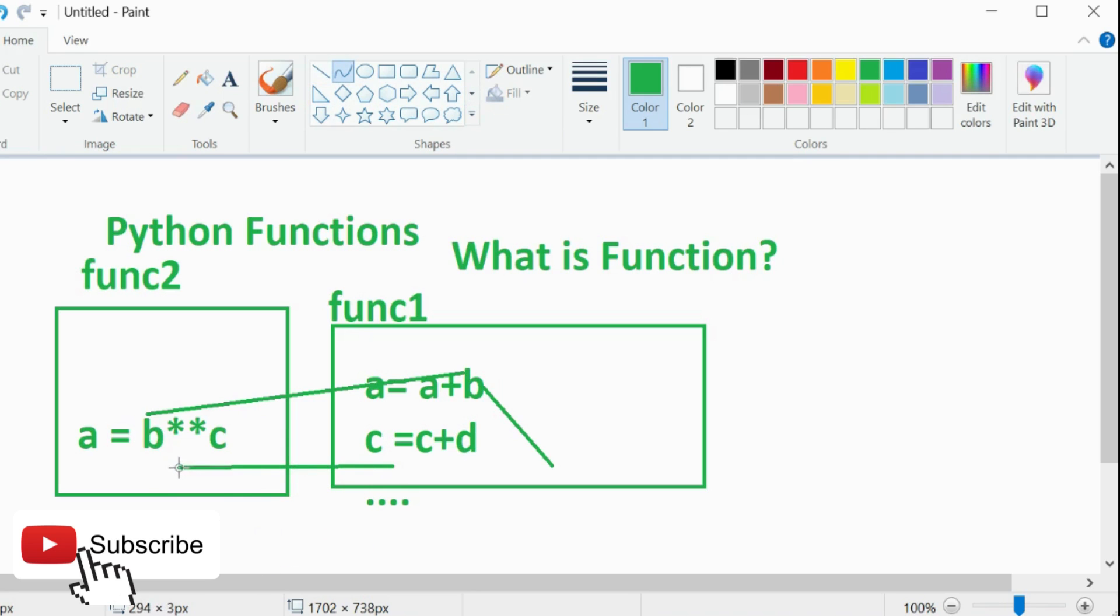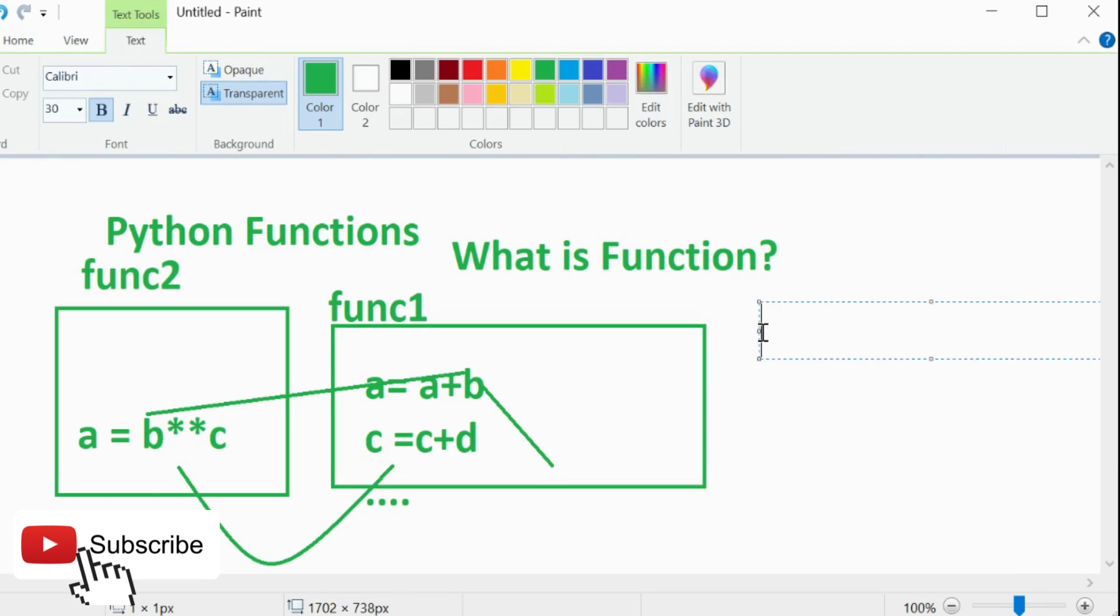So what will happen is we can have the liberty of calling this function2 from function1 by passing the required parameter. So this function2 can be dedicated to find out the cube of the number and this function is being written dedicated to find the sum of the numbers. And they both are sitting idle and cannot be executed independently. They have to be called from some place. So for example from here I am calling function1 and inside this maybe in the next line I am calling function2.